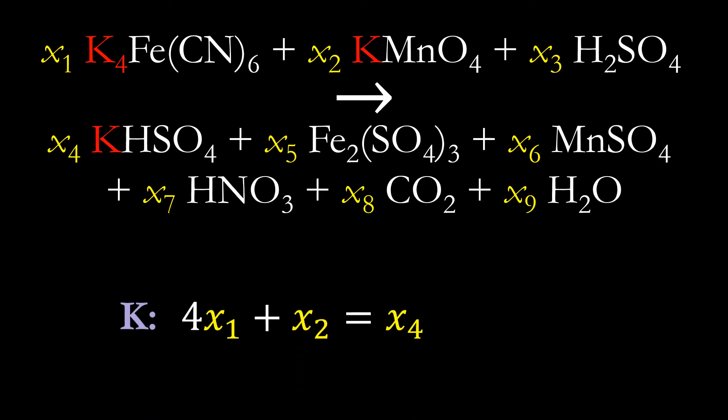What we can do is we can put together an equation that looks like this, where because there are four potassium atoms in the first reactant, we put a four before the X1. It's only appearing one time in the second reactant and one time in the formula for the only product where potassium appears. So this is just one of the equations we can write, and we'll continue to write these for all of the elements.